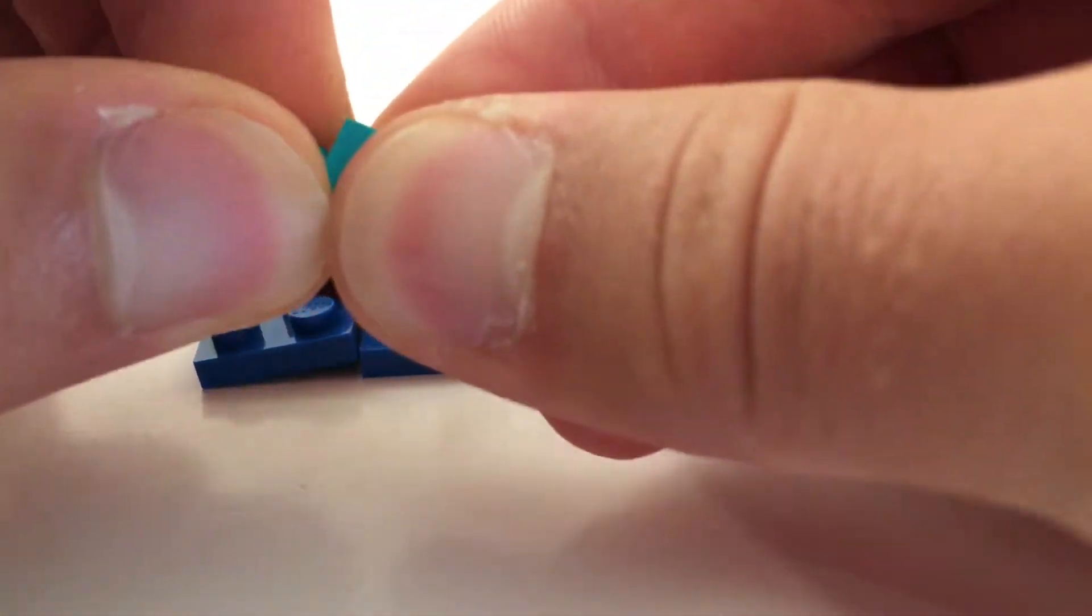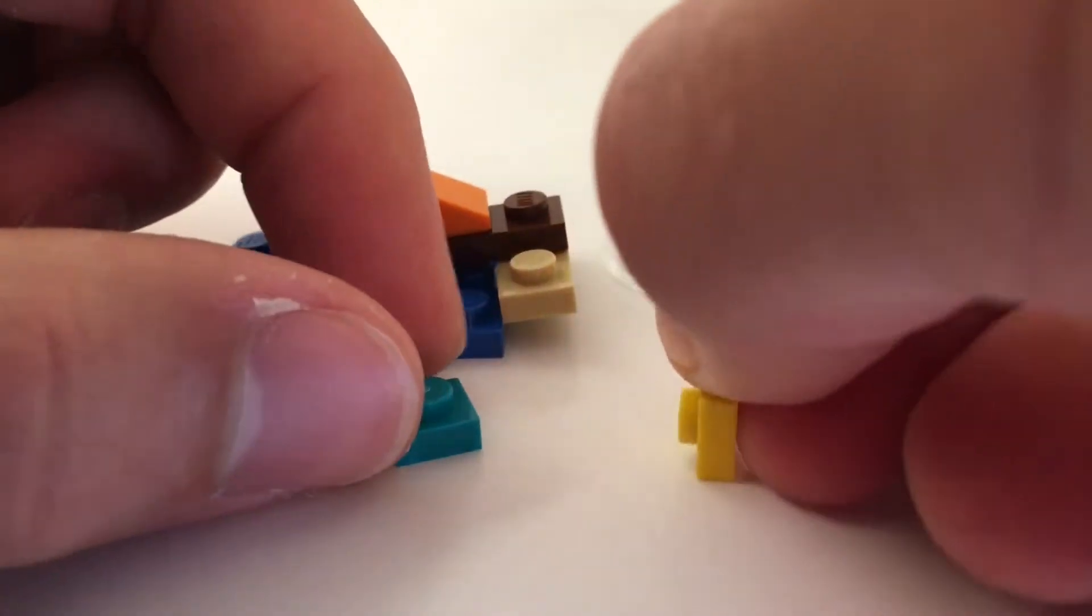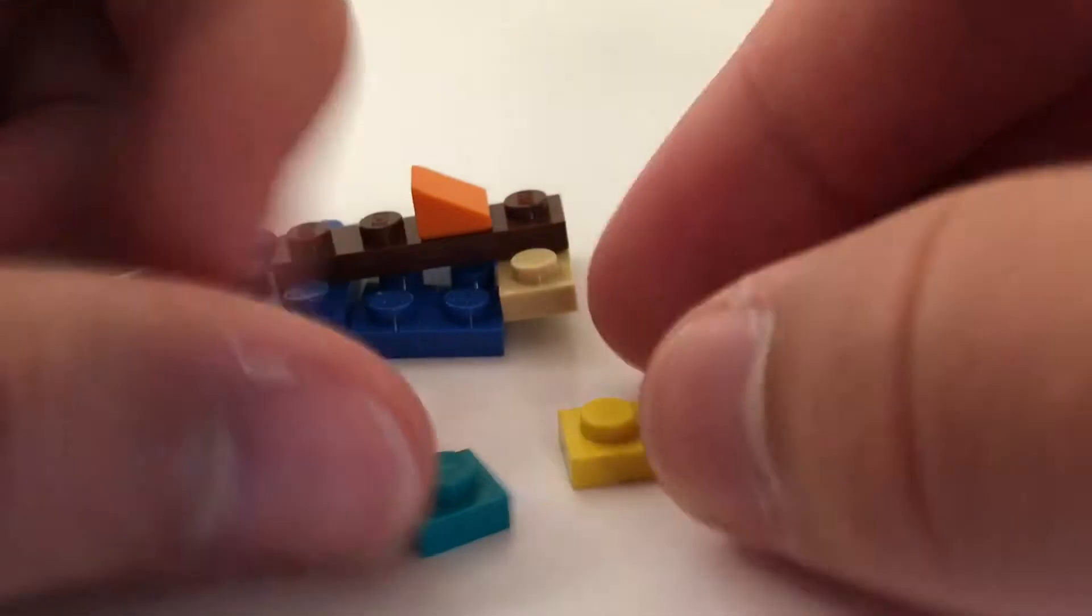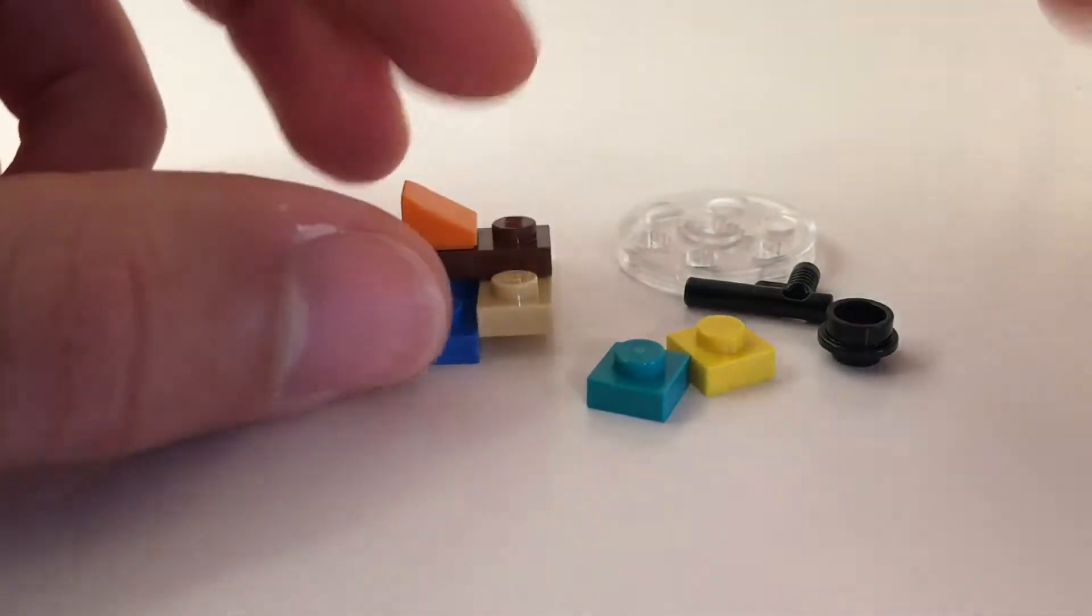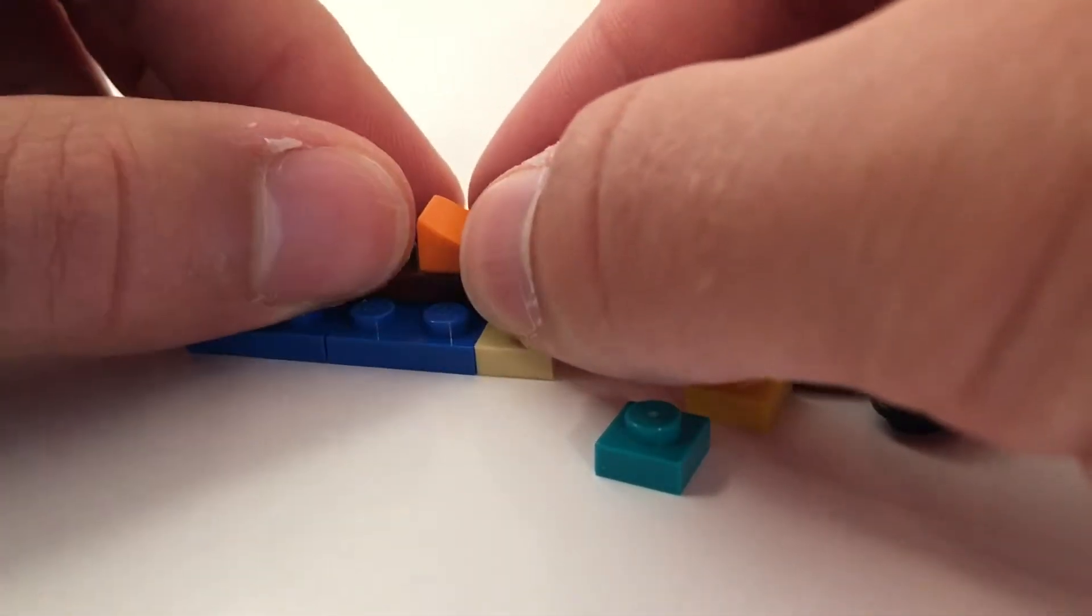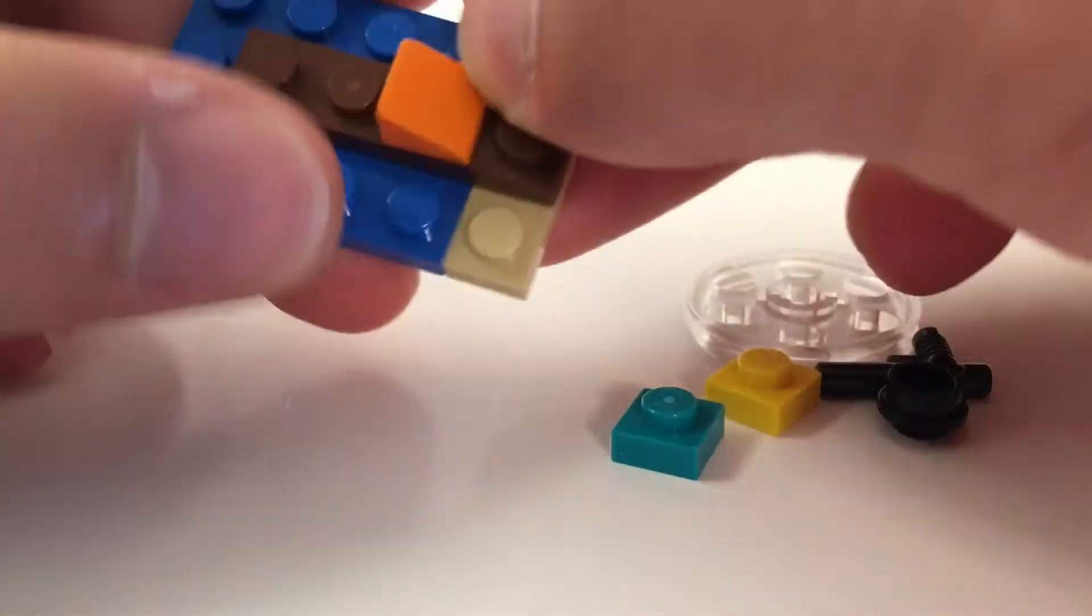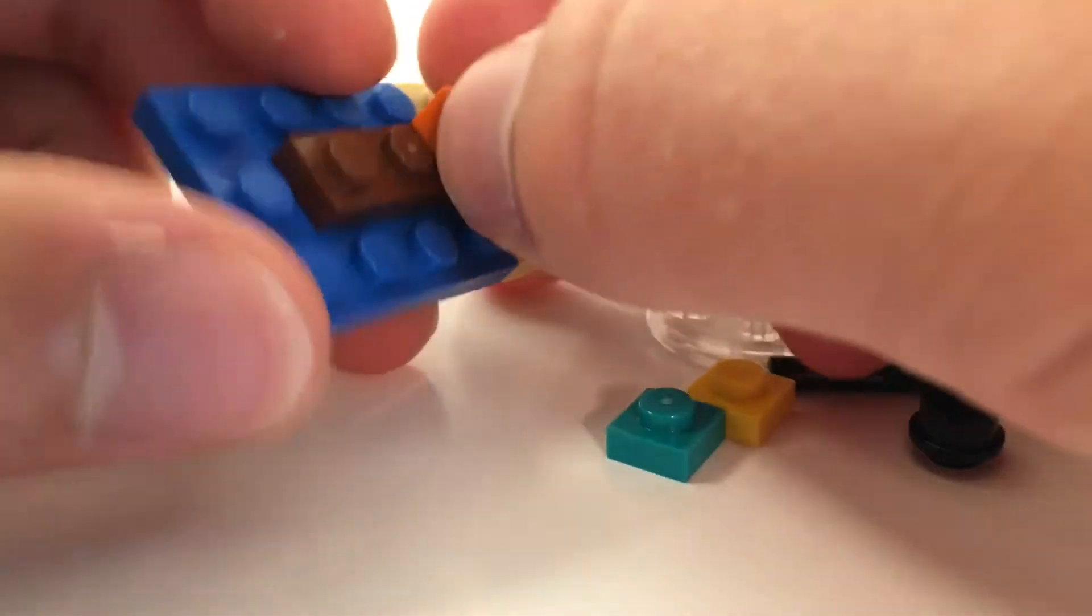All right, now we have the rest of the pier. Here we have one of the buildings, and this is built using two one by one plates. One is yellow and the other is like a teal color, which was just recently resurrected in the last few years from the LEGO color palette.